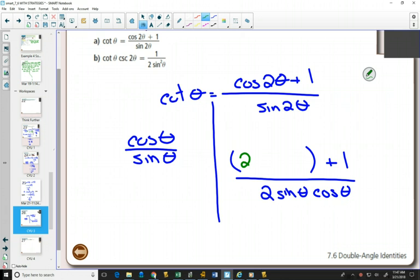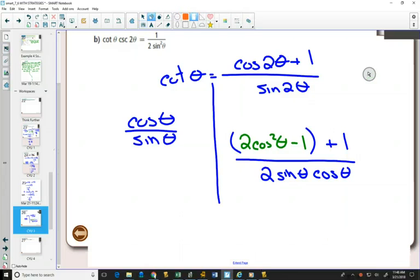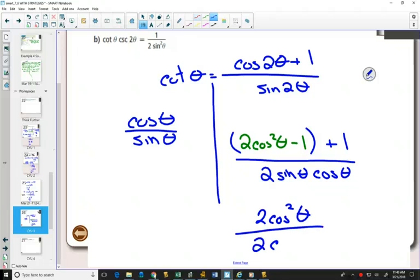Yes, so if we use the third one, we can see that our ones are going to cancel out, and that's nice because I don't have a plus one expression on my left hand side. Looking for one where the ones is going to cancel, that's going to be really nice because those are like terms. Then my expression on the left here becomes 2 cos² θ over 2 cos θ sin θ.